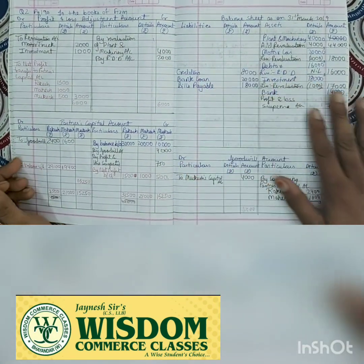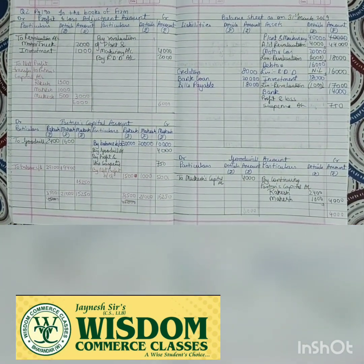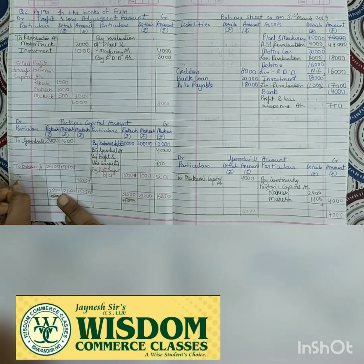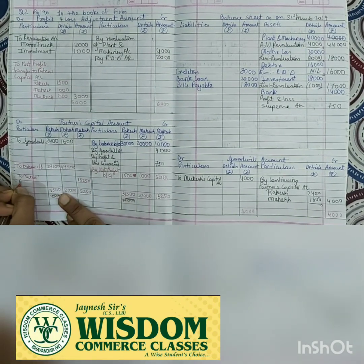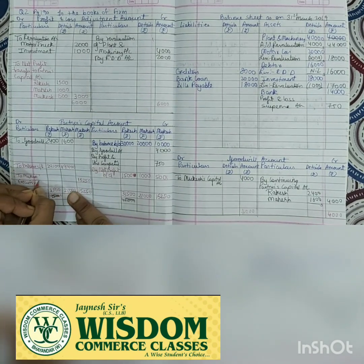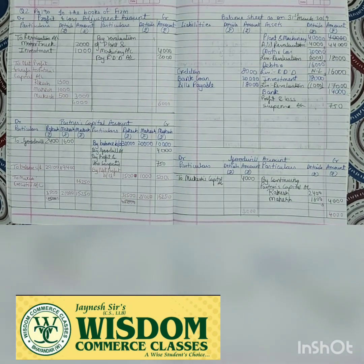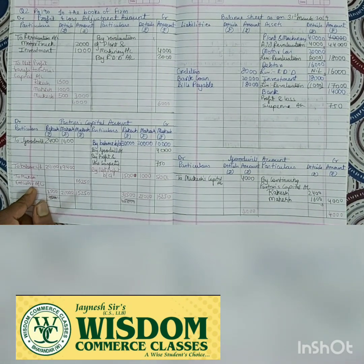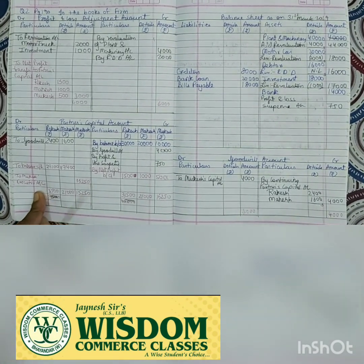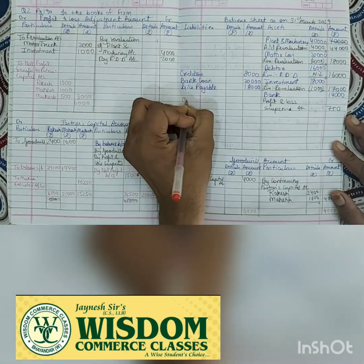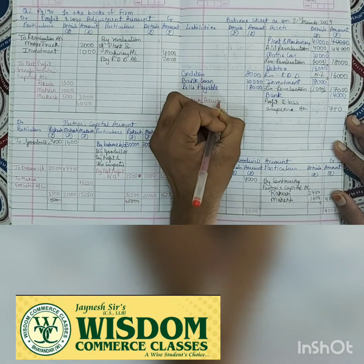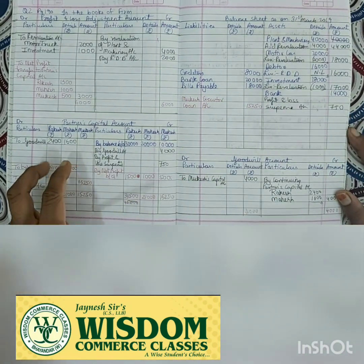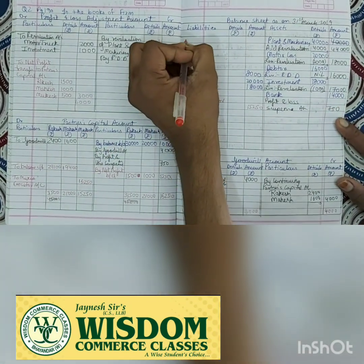These amounts go to the balance sheet as 'balance carried down'. Since Mukesh has died, his balance of 15,250 is transferred to 'Mukesh's Executor's Loan Account' - the executor being whoever represents Mukesh (his wife, brother, or family). The firm owes this money to Mukesh's representative, so it's treated like a loan account. Mukesh Executor's Loan Account: 15,250.